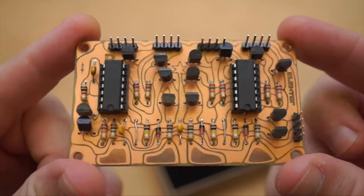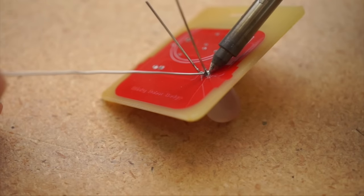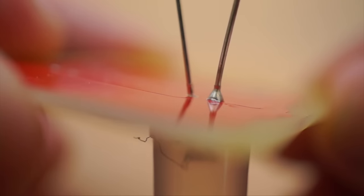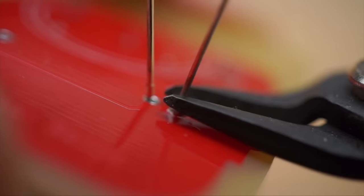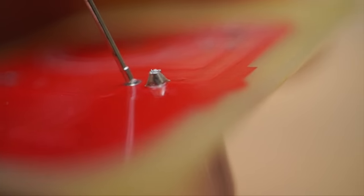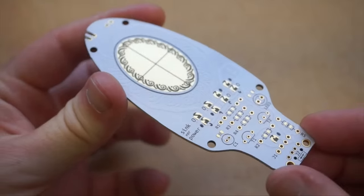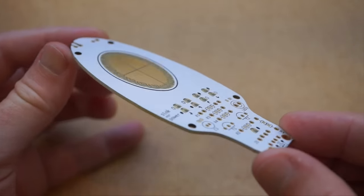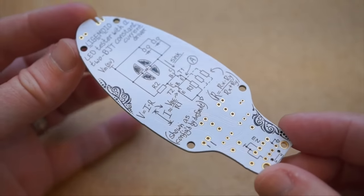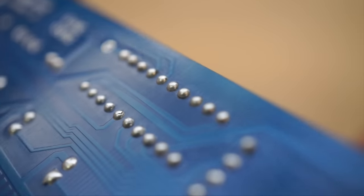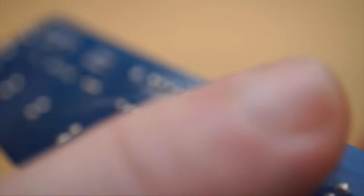Typically when you solder a connection together on a through hole circuit board like this, you get what looks like a little mountain of solder. Then you can come back through and trim it down, and maybe you get something like this. And it's tidy and it gets the job done, but these days, with project boards that are almost works of art in themselves, here's a technique for making solder joints that are prettier and smoother to touch.